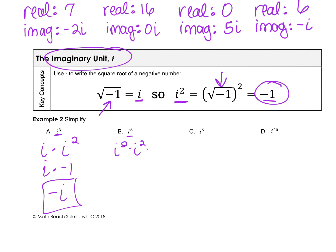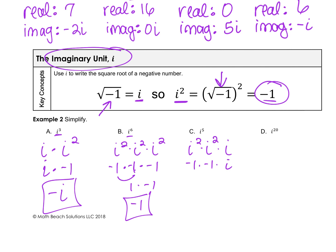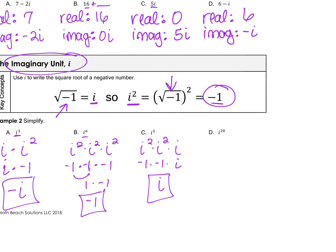For i to the 6th: i squared times i squared times i squared gives us i to the 6th, because we add exponents when multiplying. Each i squared is negative 1, so negative 1 times negative 1 times negative 1 equals negative 1. For i to the 5th: i squared times i squared times i, which is negative 1 times negative 1 times i. Negative 1 times negative 1 is positive 1, so the answer is positive i.